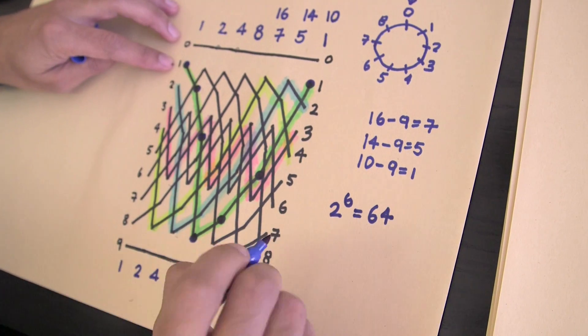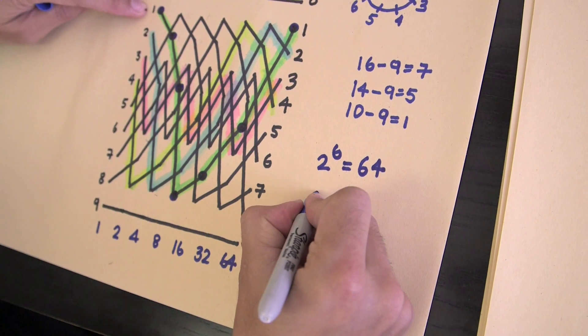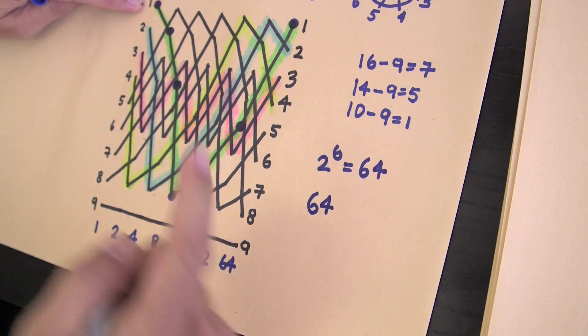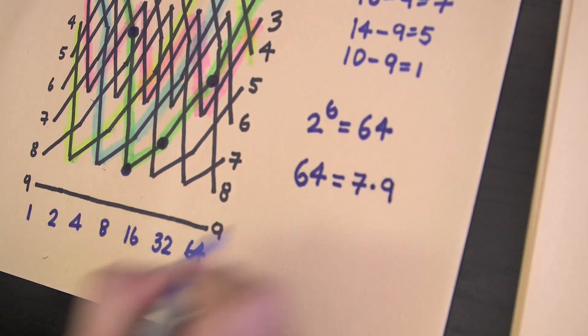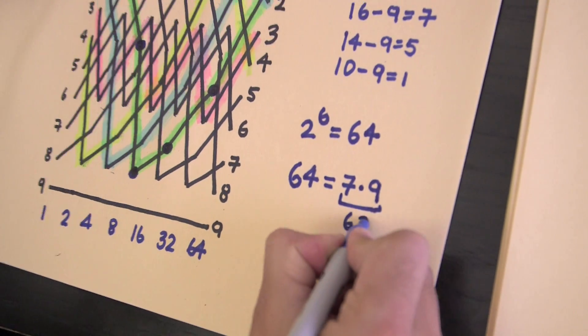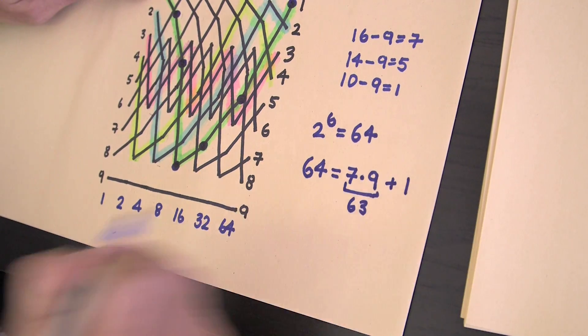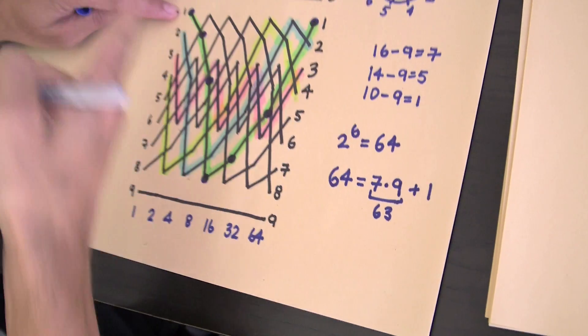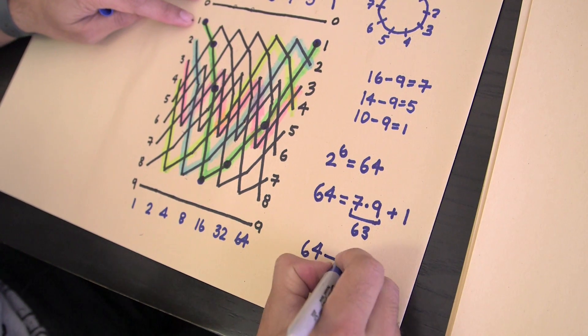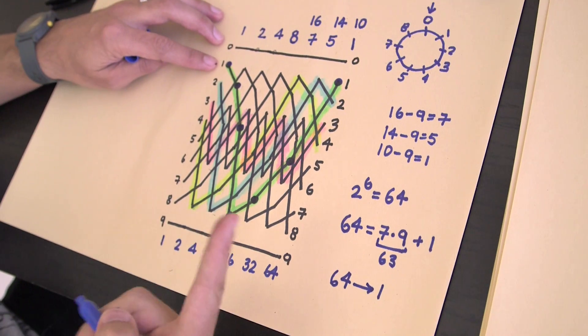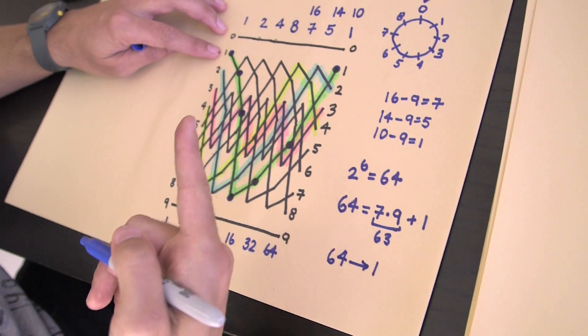And really the key to this trick — it all comes down to this — is that 64 goes how many times around the clock? Because we go seven times around the clock of nine hours, which is 63. And the leftover is one. So in this world where days are nine hours long, 64 is the same number as one. And that means that if you double six times, you're multiplying by 64, which is the same thing as multiplying by one.